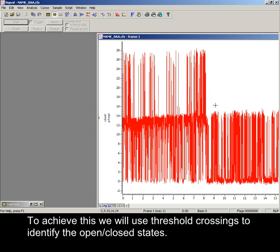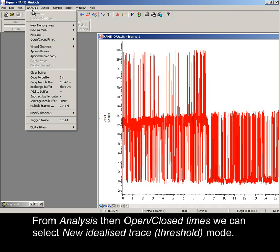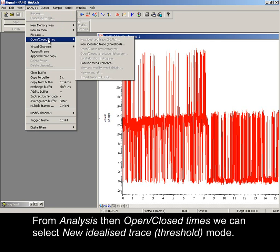To achieve this, we will use threshold crossings to identify the open-closed states. From Analysis, then Open-Closed Times, we can select New Idealized Trace Threshold Mode.